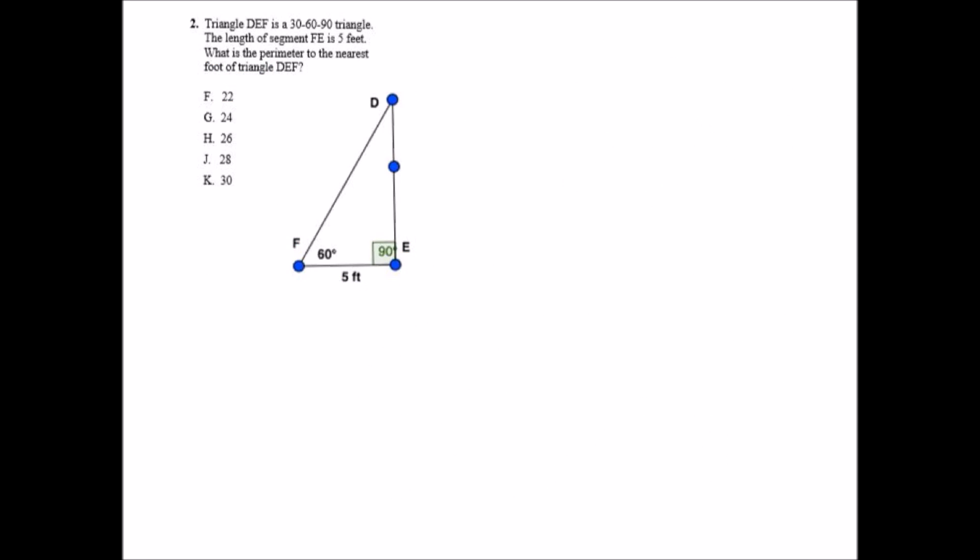Question 2 says triangle DEF is a 30, 60, 90 triangle. Obviously we see the 90 and the 60, so we know that this is the 30 here. The length of segment FE is 5 feet. It wants us to find the perimeter of triangle DEF to the nearest foot.